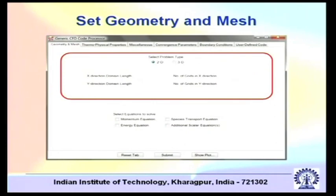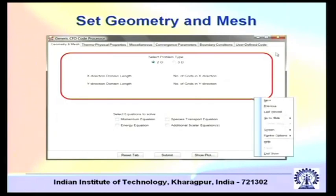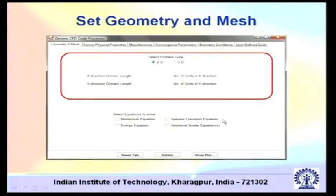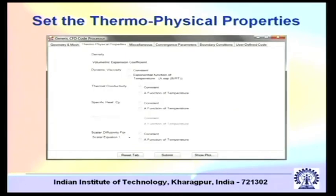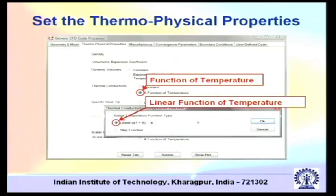So we quickly go through these steps. For a generic case, you first set geometry and mesh — for example, using a GUI to select whether it is a 2D or 3D problem, the domain lengths along x and y direction, and select the equations to solve, such as momentum equation, energy equation, and additional scalar transport equations. Then set the thermophysical properties, which may be constants or specified as a function of the variable itself — for example, thermal conductivity may be a linear function of temperature. These facilities may be available through a graphical or standard programmable user interface.